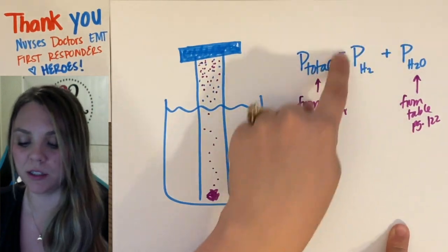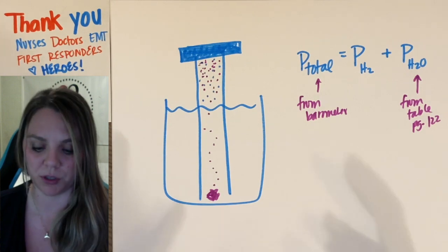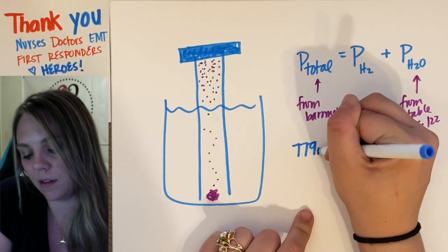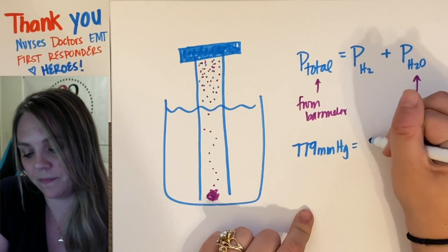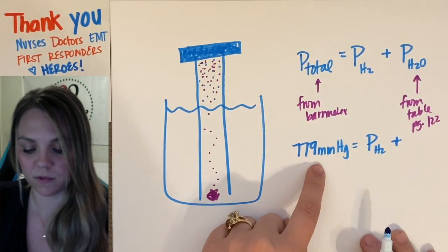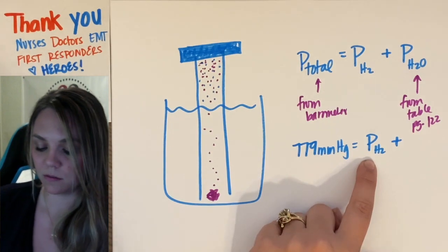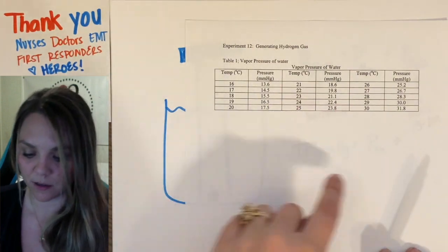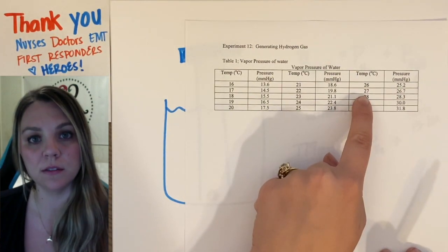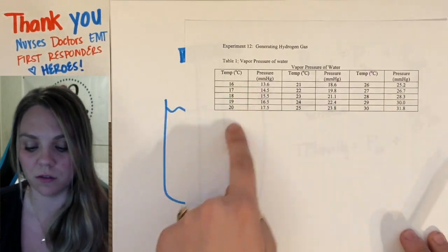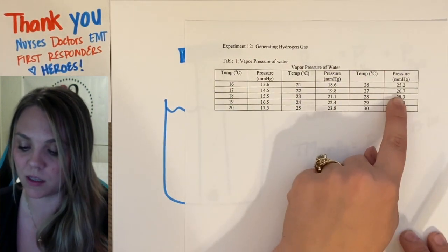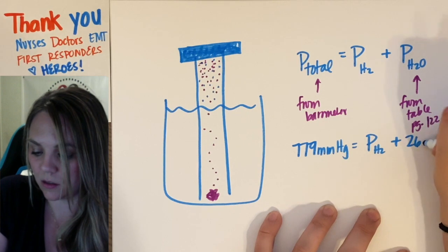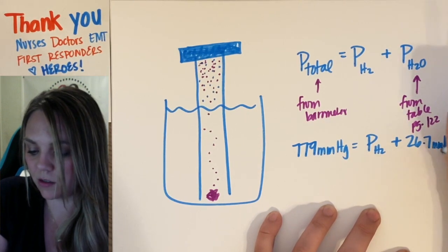Now, what I need to do is solve for the pressure of my hydrogen gas that I produced. So from my barometer, we had 779 mmHg. That's my total, right? Equals the pressure of my hydrogen plus the pressure of my water. Well, it was 27 degrees when we took our measurements, so you take your table, you find 27 degrees, and you see, aha, water vapor pressure is going to be 26.7 mmHg.